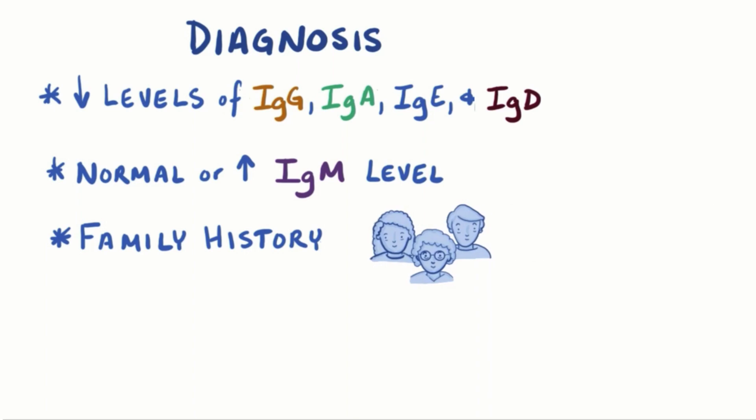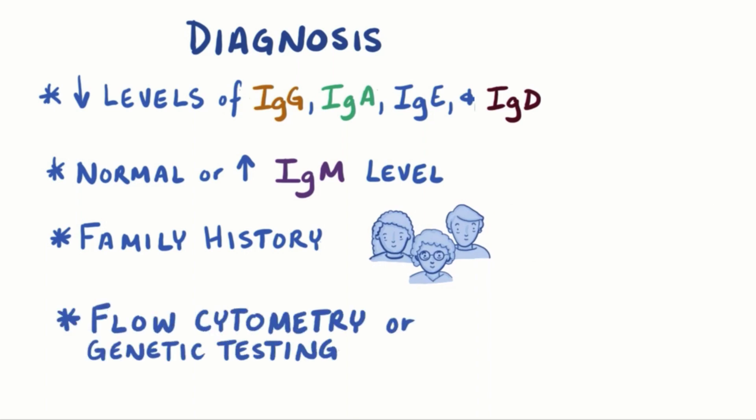Usually there's a family history of the disease, and in the majority of cases flow cytometry or genetic testing can confirm that there's a mutated CD40 ligand.